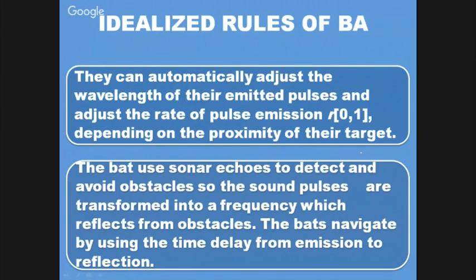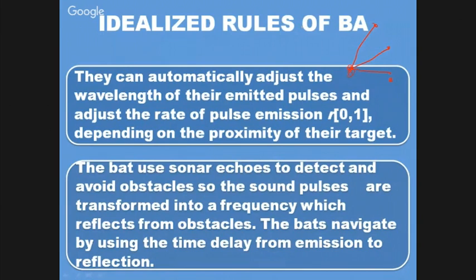As it is probability-based, we know the changes will be taken care of. With multiple groups of bats in different dimensions communicating with each other, the bat knows the actual distances and where it needs to proceed. The idealized rules: the pulse rate emission lies between 0 and 1 to know the proximity of the target; echoes detect the exact location of the prey and are transformed into frequency pulses to navigate the distance. The time delay parameter tells us the distance. Loudness varies between a maximum and minimum value — A_min and A_max — starting large and decreasing.